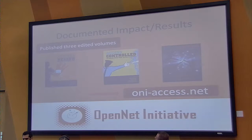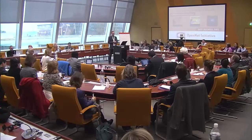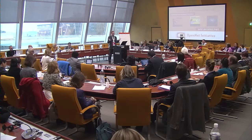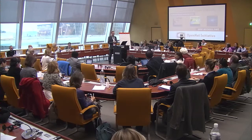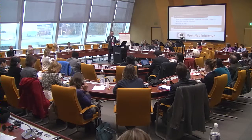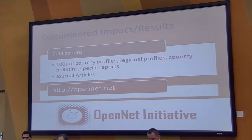Since we're based in an academic institution, we publish. We've published three edited volumes — we call the Access Series: Denied, Controlled, and Contested — which contain country profiles outlining freedom of expression in those 75 countries, as well as edited chapters by various contributors. The full text of all those books is available for download on ONIaccess.net. We've also published hundreds of specific country profiles, regional profiles, special bulletins and reports, case studies, and journal articles, all of which can be found on OpenNet.net.